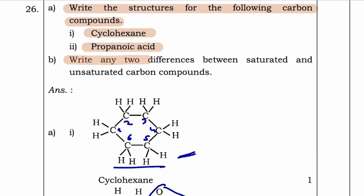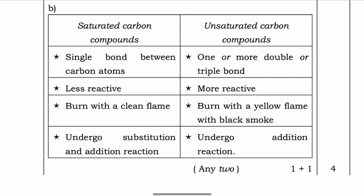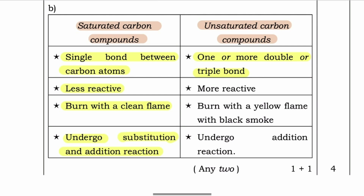Write any two differences between saturated and unsaturated carbon compounds. Saturated carbon compounds: have single bonds between carbon atoms; they are less reactive; they burn with a clean flame and undergo substitution and addition reactions. Unsaturated carbon compounds: have one or more double or triple bonds; they are more reactive; they burn with a yellow flame with black smoke and undergo addition reactions. You can write any two — preferably write three.